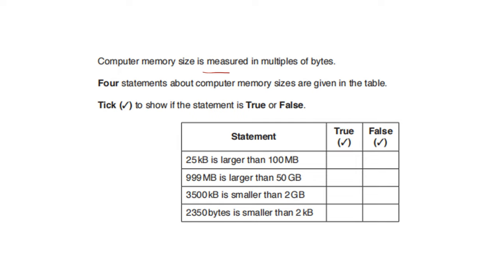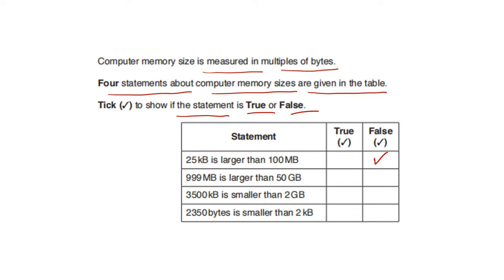Computer memory size is measured in multiple bytes. Four statements about computer memory sizes are given. Tick to show if the statement is true or false. 25 KB is larger than 100 — that is false. 999 MB is larger than 50 GB — that is also false. 3500 KB is smaller than 2 GB — that is true. 2350 bytes is smaller than 2 KB — that is also false.